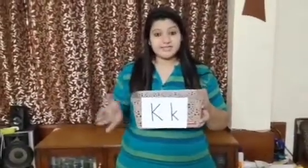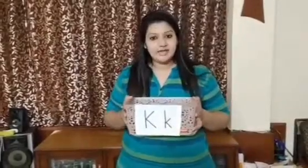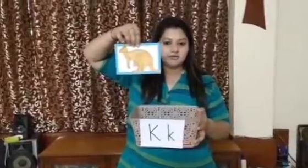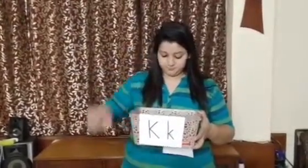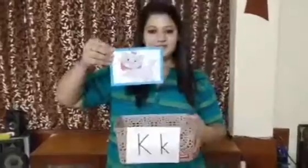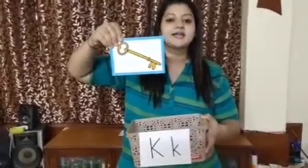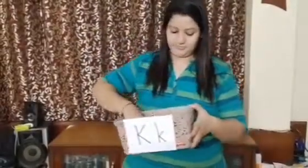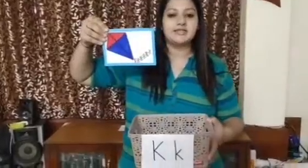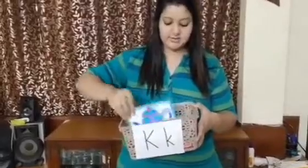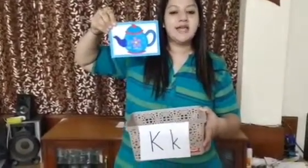Our letter K basket is complete now. Let's have a look at what words we collected. Kangaroo — K, kangaroo. Kiwi — K, kiwi. Kitten — K, kitten. Key — K, key. Kite — K, kite. And kettle — K, kettle.